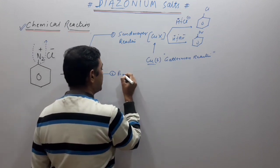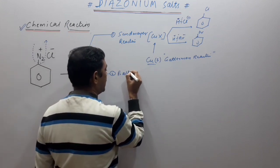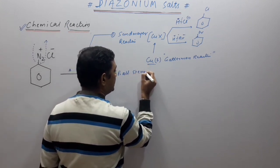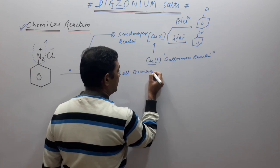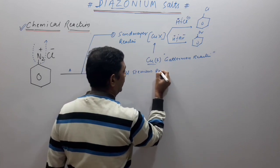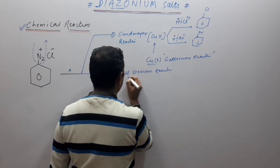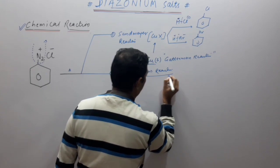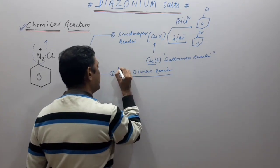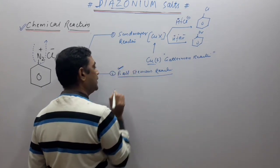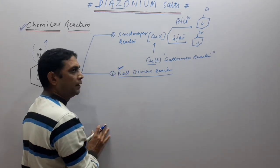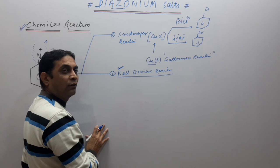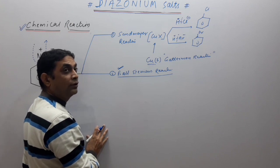In the same reaction, if you use copper powder (Cu solid/scrap iron) as catalyst instead of CuX, this reaction is called the Gattermann reaction. Remember: the only difference between Sandmeyer and Gattermann reactions is the catalyst. If CuX (cuprous halide) is used, it's Sandmeyer; if copper powder is used, it's Gattermann. The answer (product) remains the same.